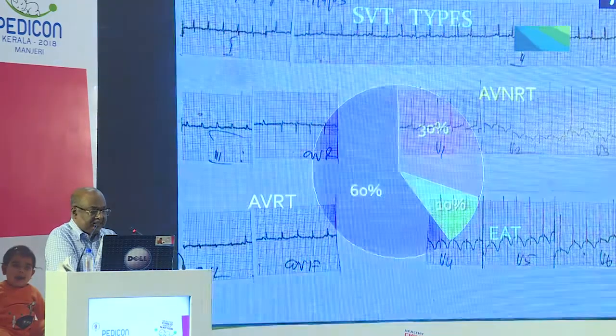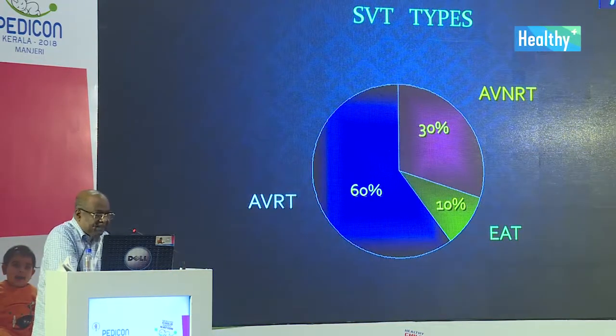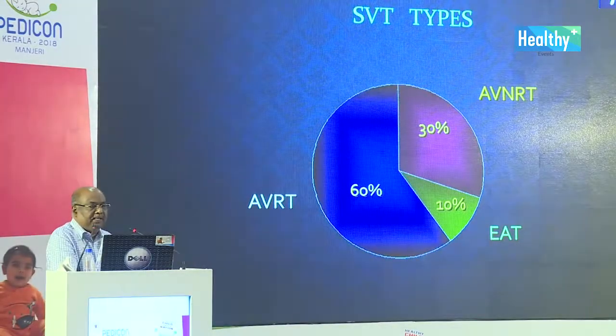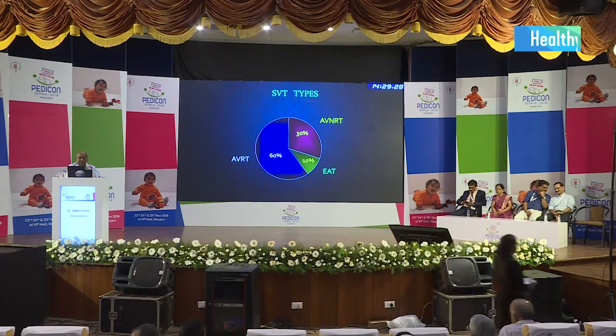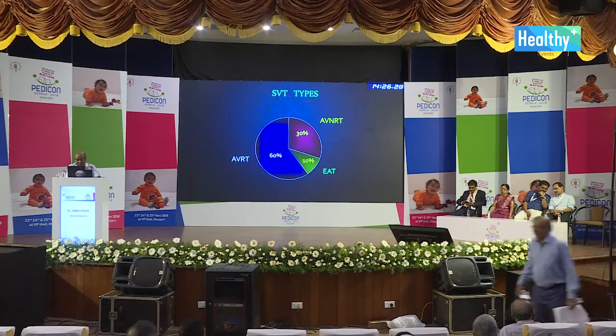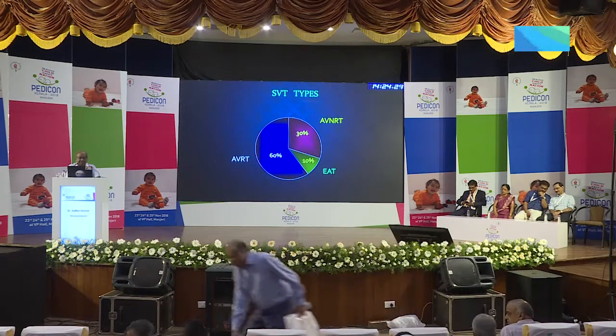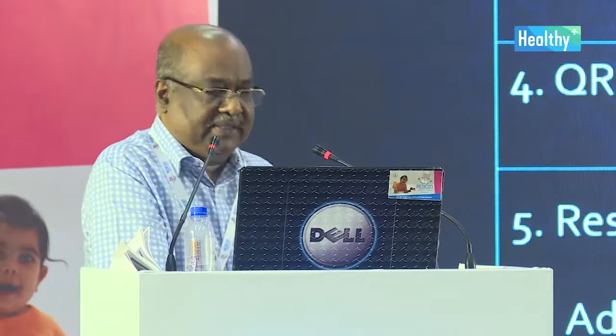Among SVTs, the most common in pediatric practice is AV re-entrant tachycardia (AVRT) due to a bypass tract such as WPW syndrome. The second most common is AV nodal re-entrant tachycardia (AVNRT). Least common in pediatrics is ectopic atrial tachycardia. The major difference: both AVRT and AVNRT respond favorably to adenosine, whereas ectopic atrial tachycardia usually does not respond to adenosine.